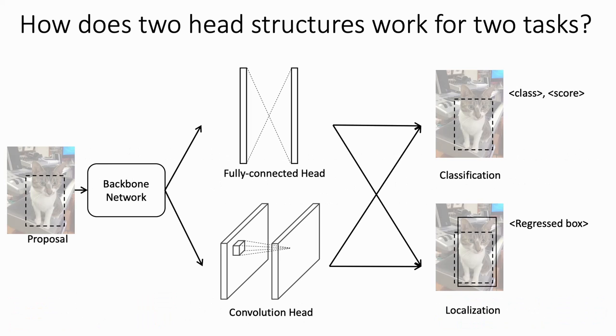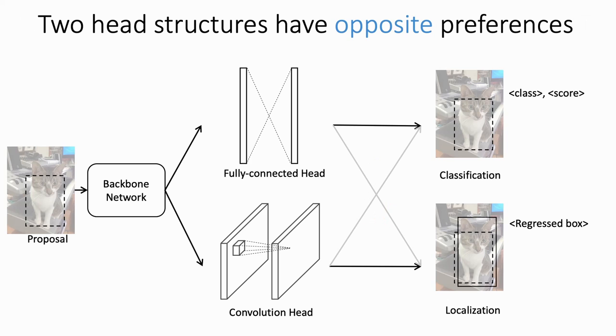CommHead and FC-Head are two widely used head structures for object detection. However, there is a lack of understanding of how these two head structures work for two tasks.